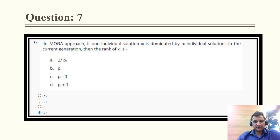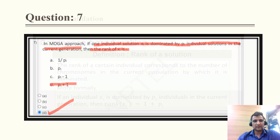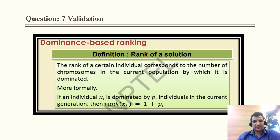Question 7: in the MOGA approach, if one individual solution x_i is dominated by p_i individual solutions in the current generation, then the rank of x_i will be 1 plus p_i. Therefore the correct option is D. The validation: if an individual x_i is dominated by p_i individuals in the current generation, the rank of x_i is given by 1 plus p_i.